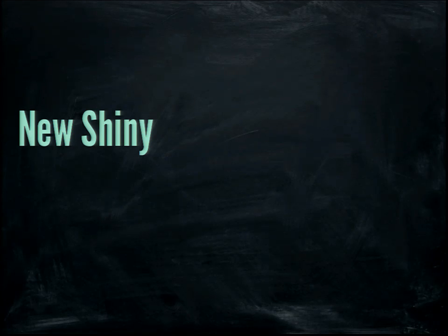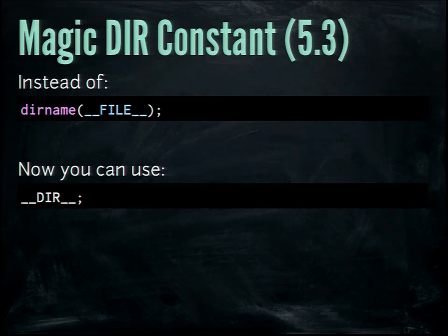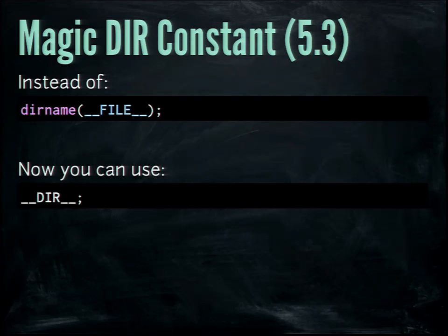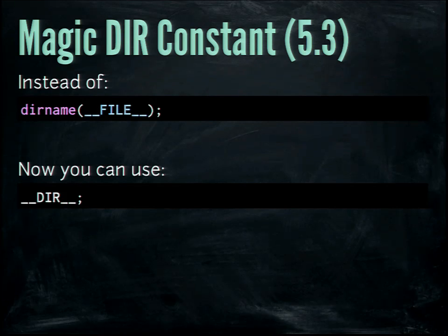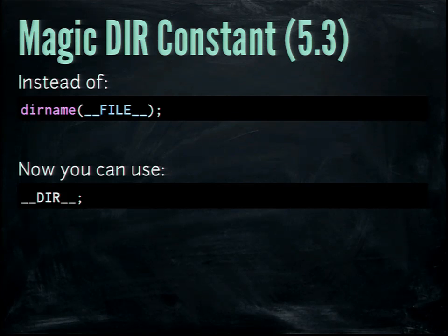The first feature I want to cover seems like such a small thing, but it will be in every project you use and everyone can understand it. This very familiar __FILE__ incantation — in PHP 5.3, we introduced another of those magic constants. So __DIR__ now works in PHP 5.3 onwards to get the directory name of your currently running script. It's the little things that make all the difference.